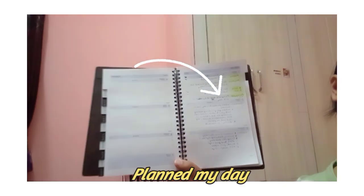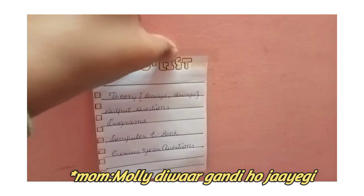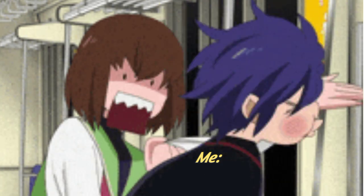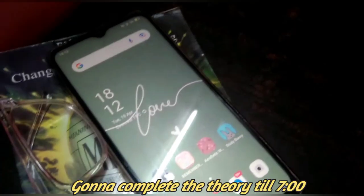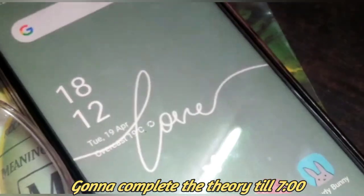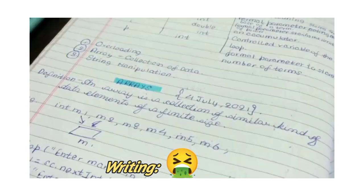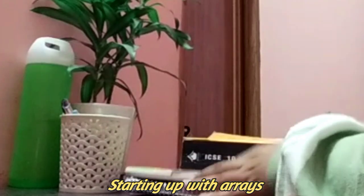And the first thing I did was planning my day. And oh, my mom is against this. I don't know what she will say. But anyways, I don't know why but I am in a very good mood today. So, it is currently 6:12 PM and I am going to complete the theory till 7. My writing is horrible but you have to ignore this. And I will be starting up with Arrays.